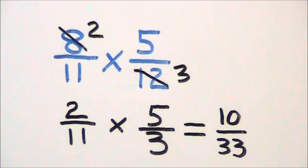So we start with our numerators, 2 times 5 gives us 10. Then our denominators, 11 times 3 gives us 33, for a final answer of 10 33rds.